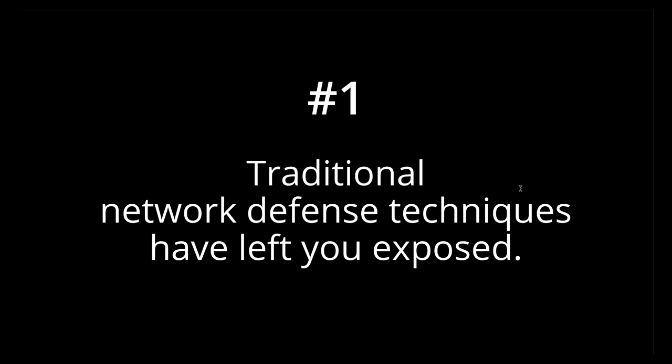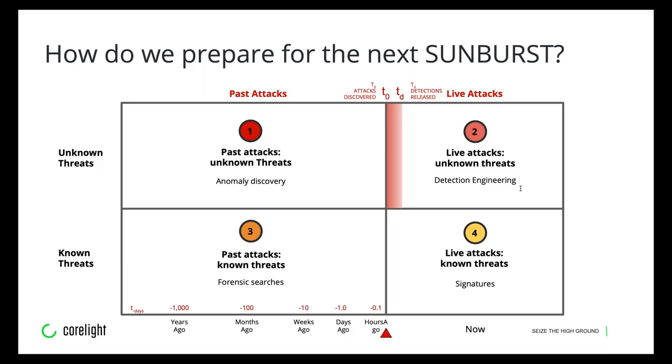The first lesson from the SolarWinds attack is that the traditional model of network defense has left many organizations exposed, and this hack demonstrates that exposure risk. We use a two-by-two matrix to frame how we at Corelight think about your defense strategy. The x-axis covers unknown or zero-day threats above the line, and known commodity or criminal threats — recognized IOCs and actors — below it.